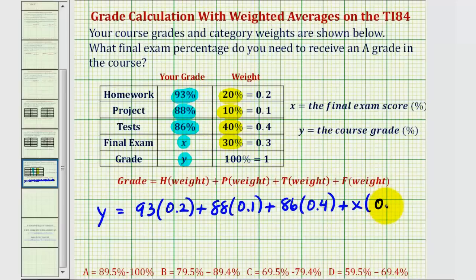So again, the important thing to recognize here is that X is the final exam percentage and Y is the course grade as a percentage. So now we'll enter this equation into the graphing calculator.